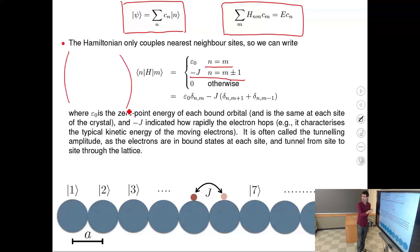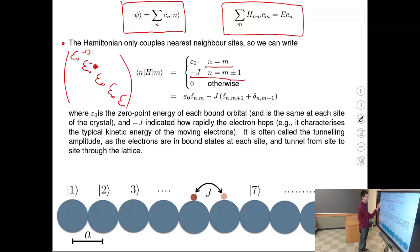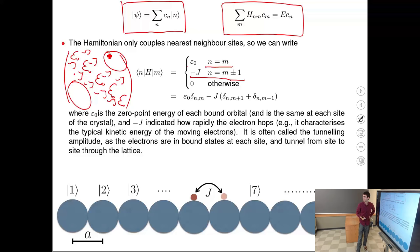The Hamiltonian matrix is now not so complicated: the diagonal is all ε₀, the off-diagonal (adjacent elements) are all −j, and everything farther from the second diagonal is zero. Those zeros describe transitions that are farther away. This is the Hamiltonian we are going to solve today.